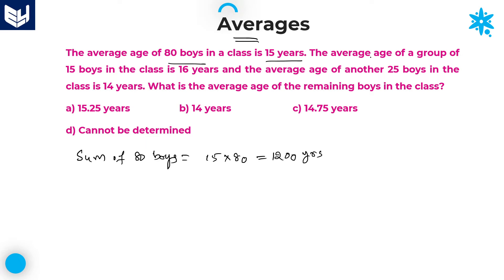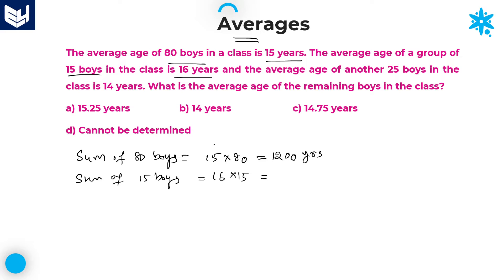And after that, the average age of a group of 15 boys in the class is 16 years. Among those 80 members, 15 members' average is given, which is 16 years. Therefore, sum of 15 boys is equal to average into number of boys, which is 16 × 15 = 240 years.